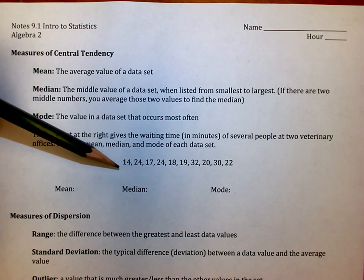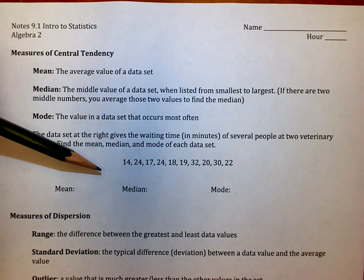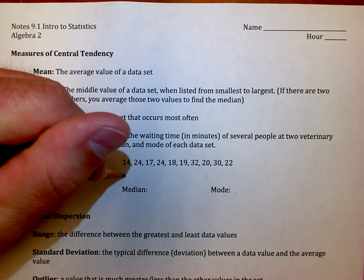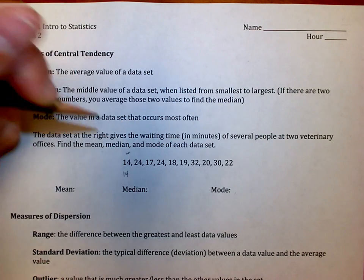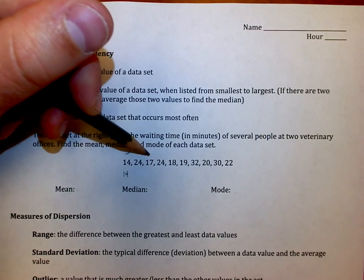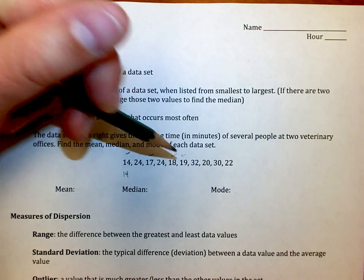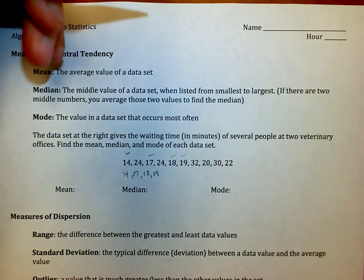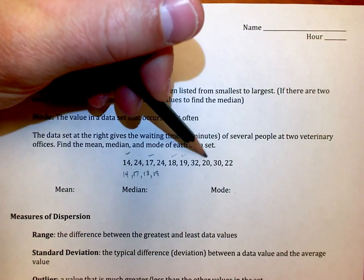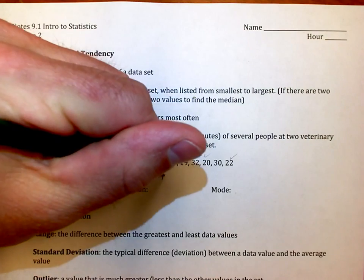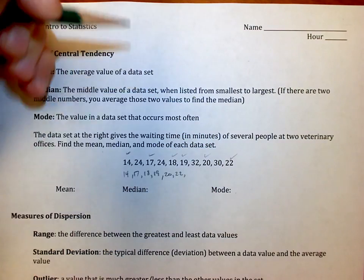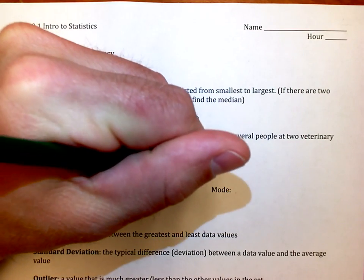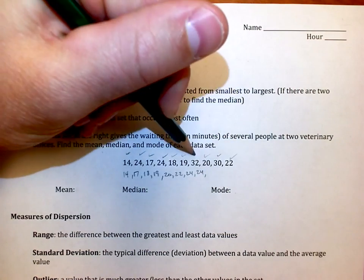If I want to do median, I would list them from smallest to greatest, so I'd reorder them, and then I'm going to pick the middle value. The 14 would be first, then the 17, then the 18, then the 19. Then I hit 20, then 22, then 24 a couple of times, and then I've got a 30 and a 32.